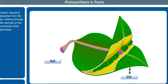Carbon dioxide is absorbed from the air entering through the stomata on the underside of the leaf blade.